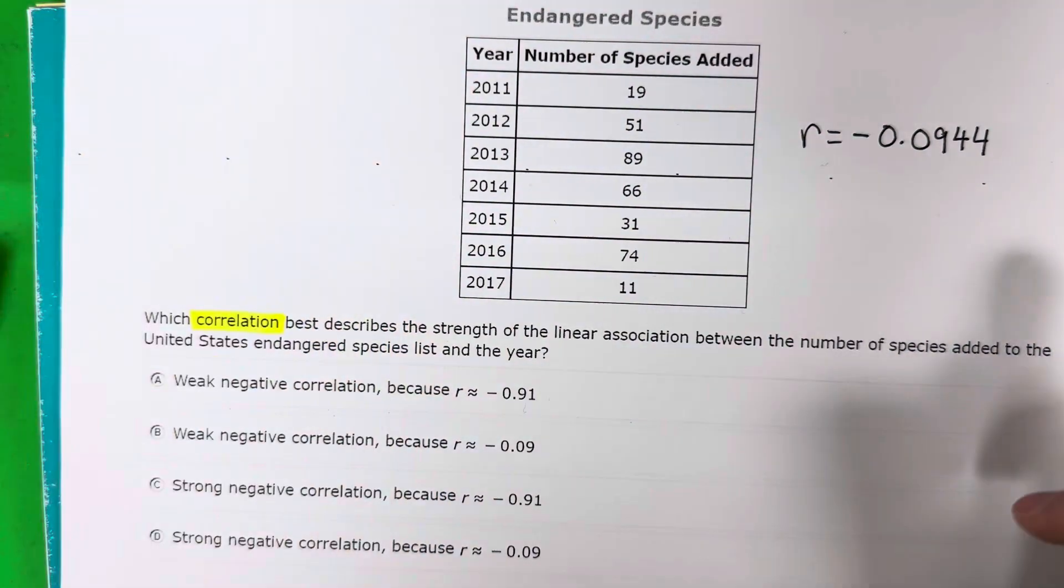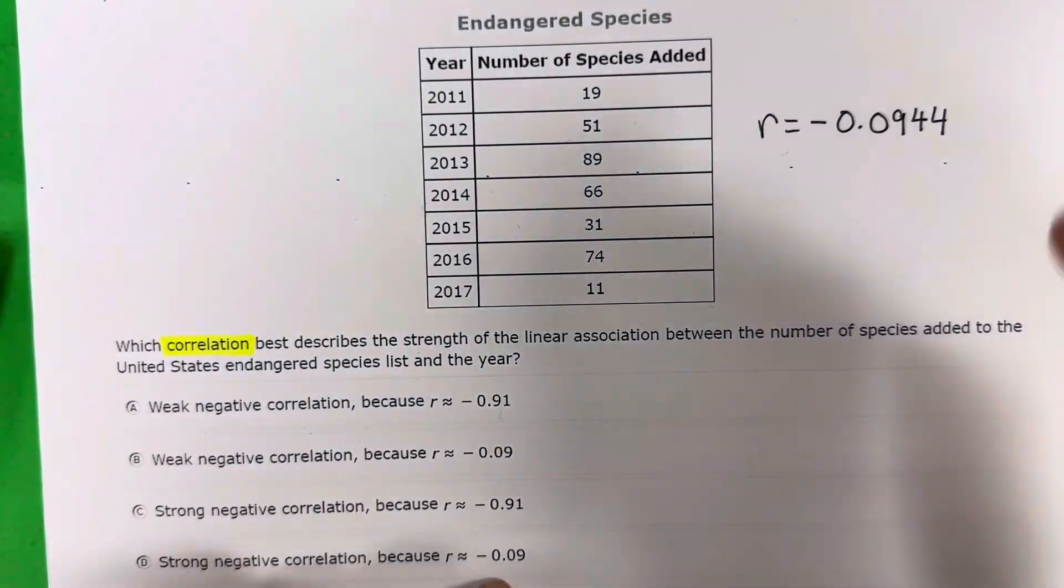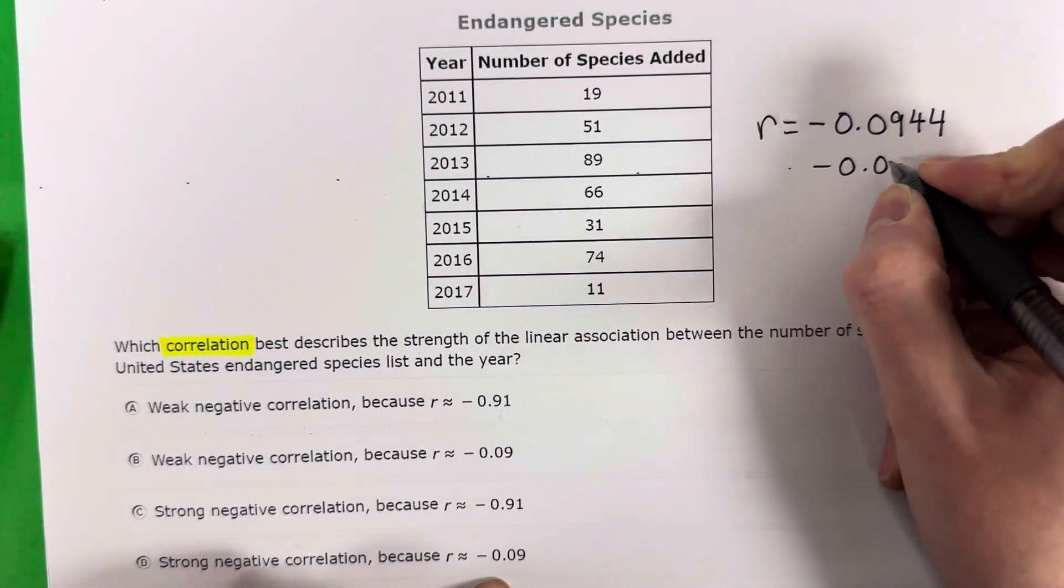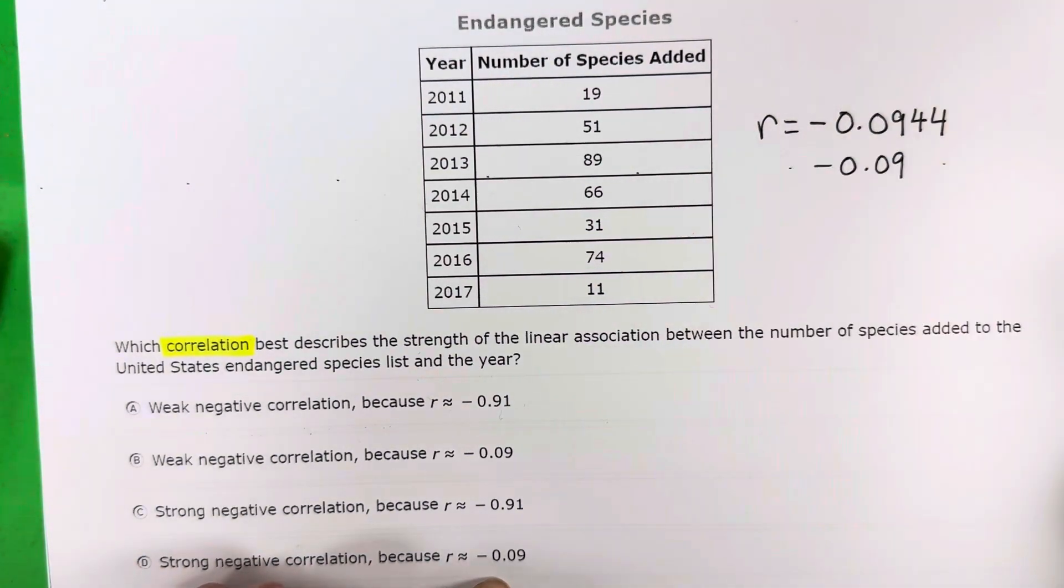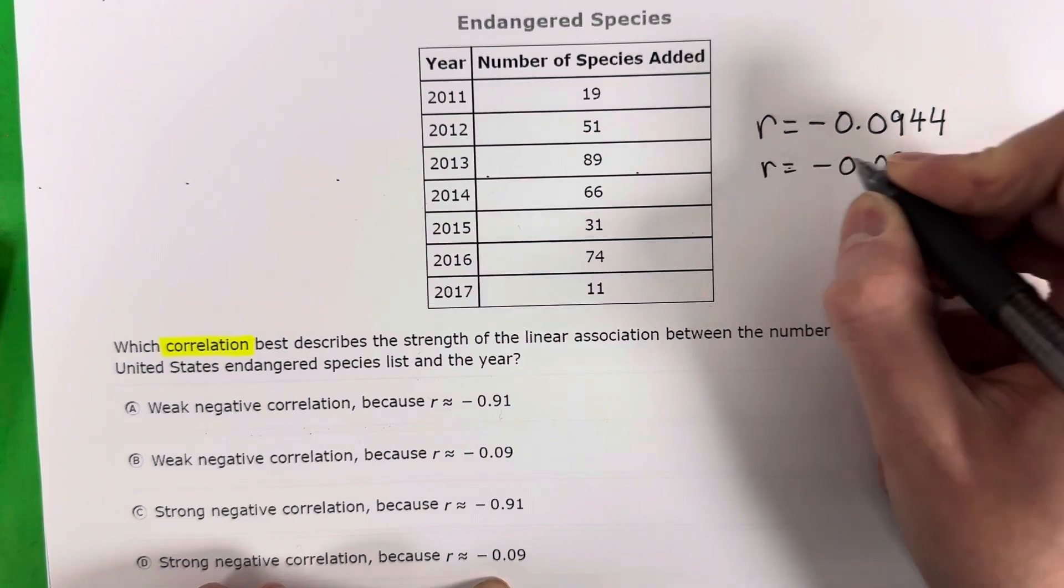Okay. So to shorten it here, it's negative 0.09. It does not round up because that's a four, right? You would round up if it's a five or greater. So that would be my R right here.